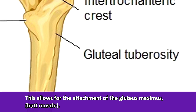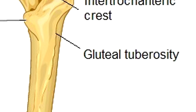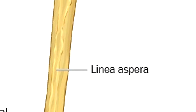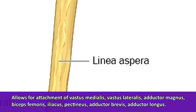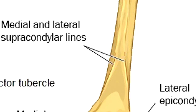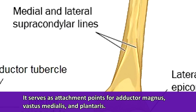You'll notice this rough ridged line below the intertrochanteric crest, which is called the gluteal tuberosity. This allows for the attachment of the gluteus maximus muscle — your butt muscle — which will help you remember that the gluteal tuberosity is on the posterior side of the femur. The rough line continues down the posterior side of the shaft and is called the linea aspera, a Latin term literally meaning rough line, and it allows for the attachment of various muscles. The linea aspera forks off into medial and lateral supracondylar lines, which serve as attachment points for various muscles.